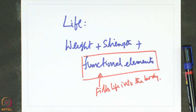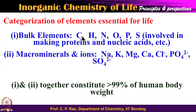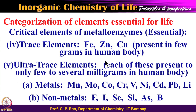As you can see from this slide, we have bulk elements - carbon, hydrogen, nitrogen, oxygen, phosphorus, and sulfur - and we have macrominerals: sodium, potassium, magnesium, calcium, chloride, phosphate, sulfate, etcetera. We also have several trace and ultra trace elements. Iron, zinc, copper are trace because they are present in terms of a few grams per body weight of 70 kilograms, whereas ultra trace elements are those where we have only a few milligrams for the total body weight of 70 kilograms. Ultra trace elements can be further divided into metallic and non-metallic. So this is the compositional aspect.